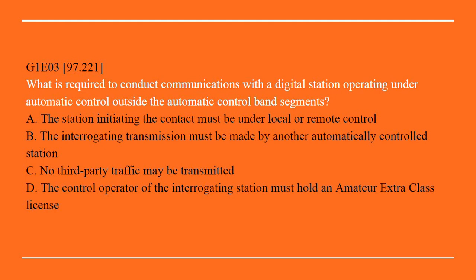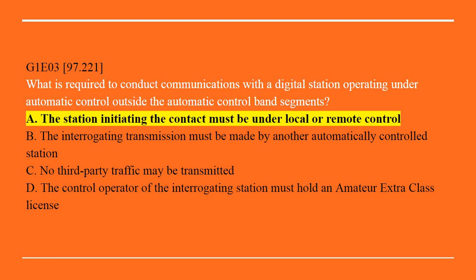G1E03: What is required to conduct communications with a digital station operating under automatic control outside the automatic control band segments? A. The station initiating the contact must be under local or remote control. B. The interrogating transmission must be made by another automatically controlled station. C. No third party traffic may be transmitted. Or D. The control operator of the interrogating station must hold an Amateur Extra class license. Correct answer A: The station initiating the contact must be under local or remote control.